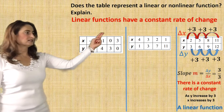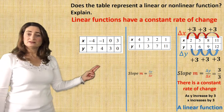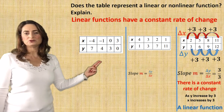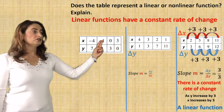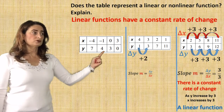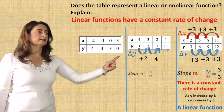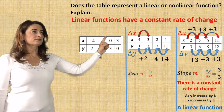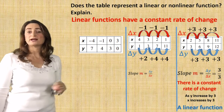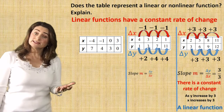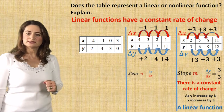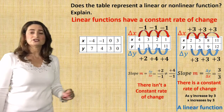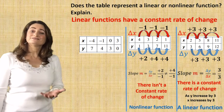Now let's discuss the second table. We need to find out if it has a constant rate of change — is the slope the same between two points? The change in y from 1 to 3 is adding 2; from 3 to 7 is adding 4; from 7 to 11 is adding 4. The change in x from 4 to 3 to 2 to 1 is subtracting 1. There isn't a constant rate of change, therefore it's a nonlinear function.